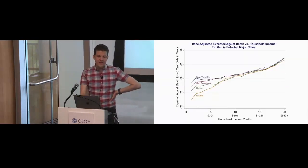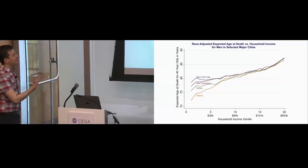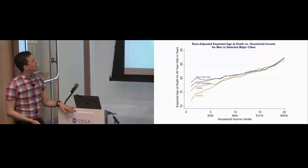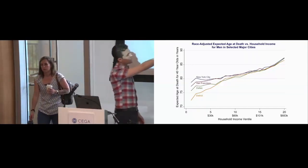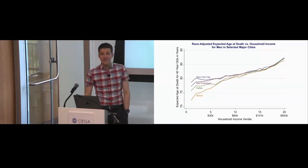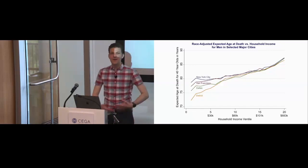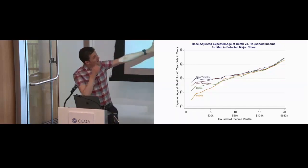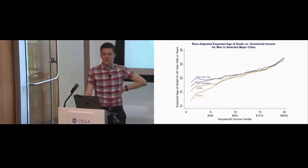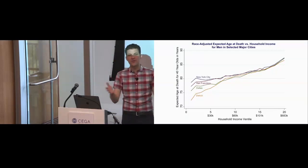Let's think about what life expectancy looks like in different areas. Here are four carefully chosen cities: for above-median income people, life expectancy looks very similar regardless of where you live — in New York City, San Francisco, Dallas, or Detroit. But in the bottom half of the income distribution, there's enormous variation across place. People in New York City are living about five years longer than people in Detroit. This is broadly true across the entire country.